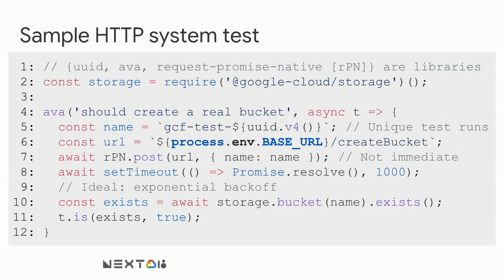Here's a sample HTTP system test. Some may notice it looks exactly the same as the integration test we just discussed. The only difference is the base URL specified — instead of something on a local machine, it's the actual deployed Cloud Function URL, something like US-central1-{your-project-id}.cloudfunctions.net. The challenges of unique test runs, state dependence, and the asynchronous nature of bucket creation still apply. These are more common in system tests; sometimes they occur in integration tests, but in system tests they're almost guaranteed when working with a cloud platform.